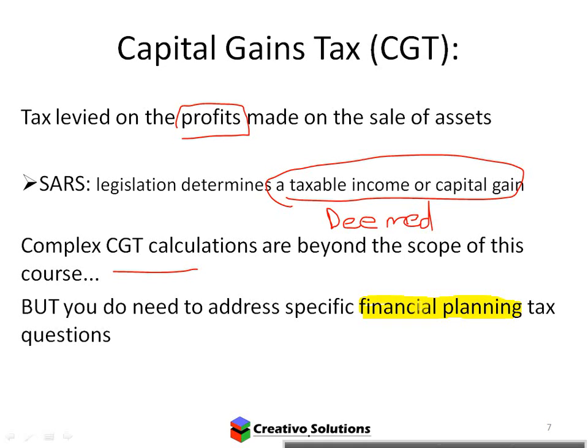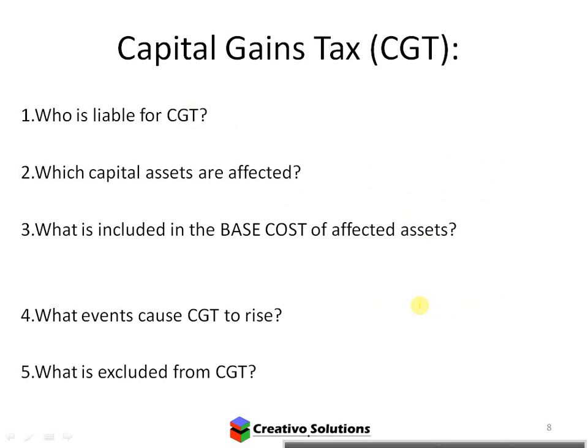Tax avoidance is fine, tax evasion is bad. You pay your fair share — not more than you should, but at least meeting the legislation. You're paying the minimum amount of tax legally required. For CGT: who is liable? Natural and juristic persons — companies and individuals. Which assets are affected? All capital assets that are capital in nature.